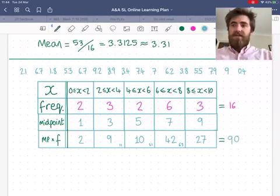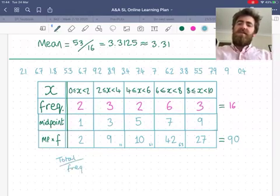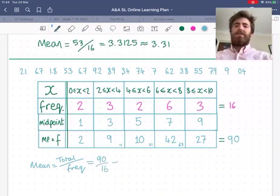So what we need to do is the same as before. I have my total, even though it's an estimate. And I'm going to divide by the frequency. So total divided by frequency is going to give me the mean. So if I just do that calculation, 90 divided by 16, let's see,